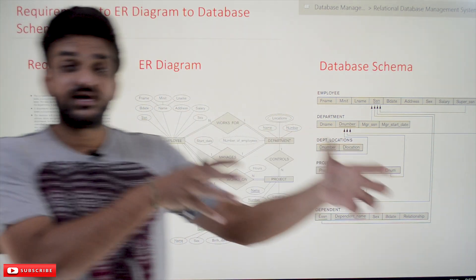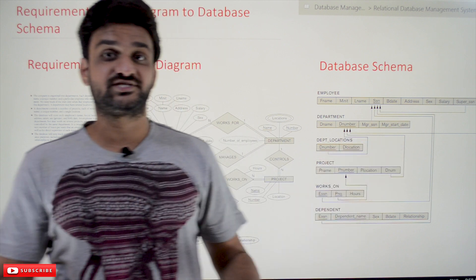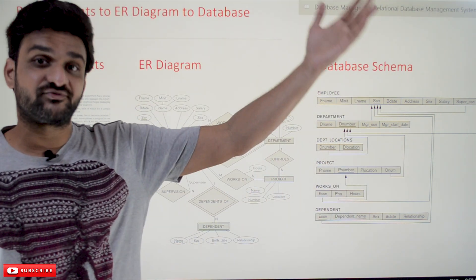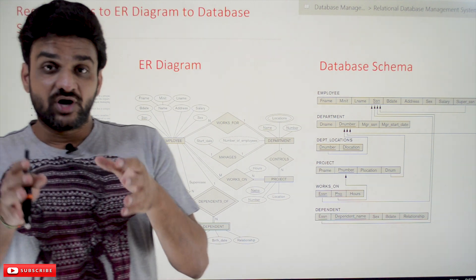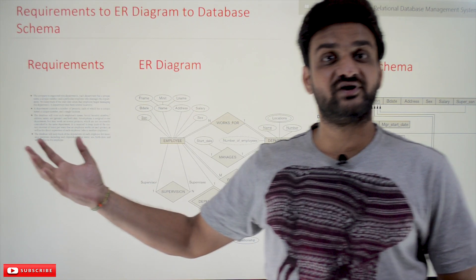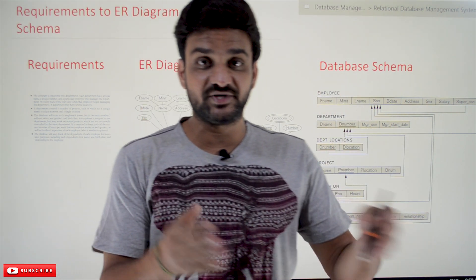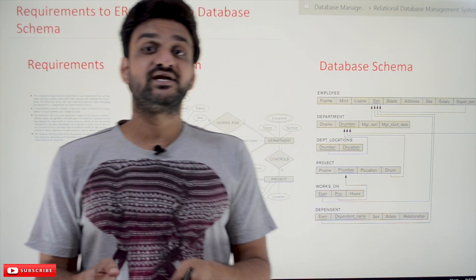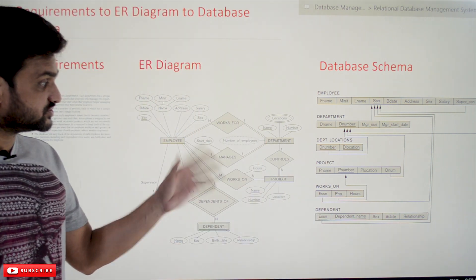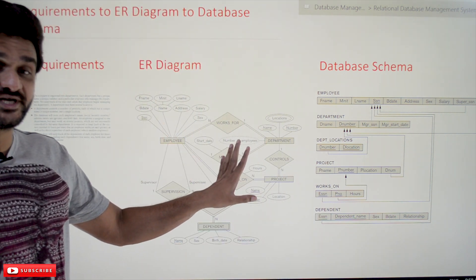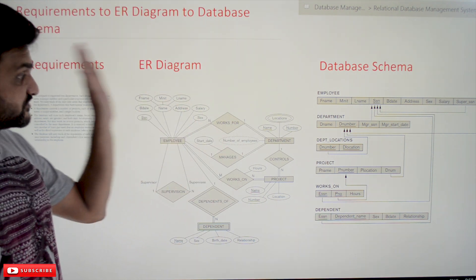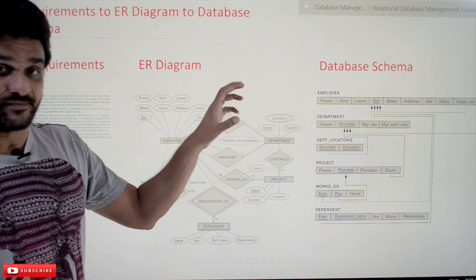— we can use the analogy of house construction that we have seen in our first classes. The requirements are given by the user, just as a user gives requirements to a civil engineer. The civil engineer then constructs the blueprint — same as requirements being converted to an ER diagram, requirements converted to a blueprint.